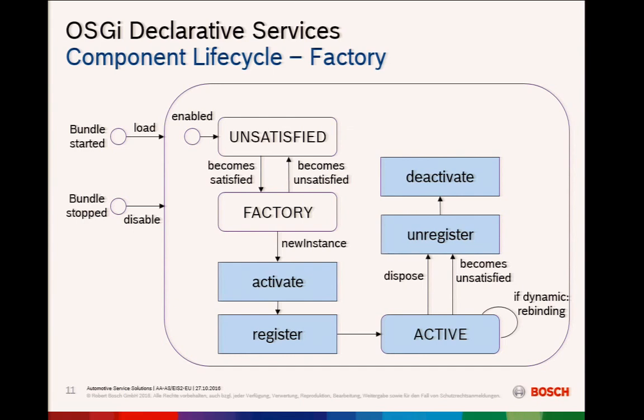For completeness, with a component factory, your factory gets satisfied and when you request a service it gets activated, creates a new instance that gets discarded afterwards. With DS 1.3 we have the prototype scope, so from my understanding this leads to the fact that the component factory is not very common or useful anymore. I think there might still be one or two use cases, but I haven't found any on the web.